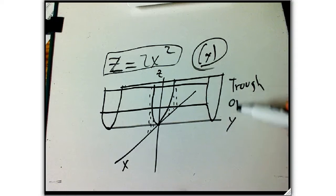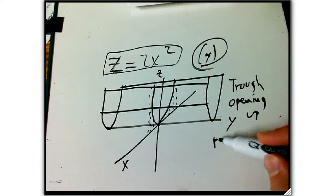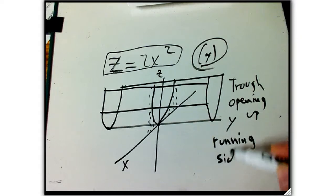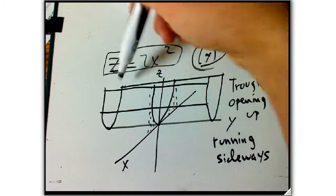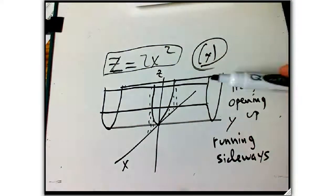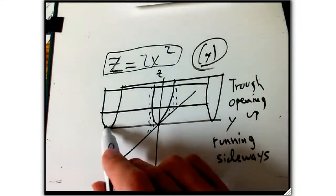It opens up. It's a trough opening up and running sideways. So that's a verbal description. The trough, the inside of the trough is in here, and it runs left and right, right along the y-axis.